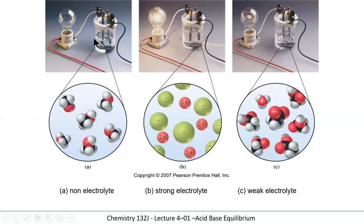Looking at a conductivity apparatus, if we have a non-electrolyte, all particles exist as molecules and the light bulb doesn't come on when the electrodes are placed into the solution. An example would be table sugar, which is sucrose. Sucrose molecules do not ionize in water — the forces between water molecules and sucrose molecules are not sufficient to release charged particles.